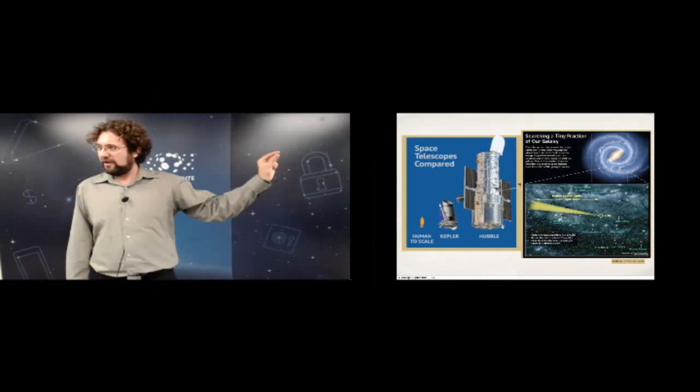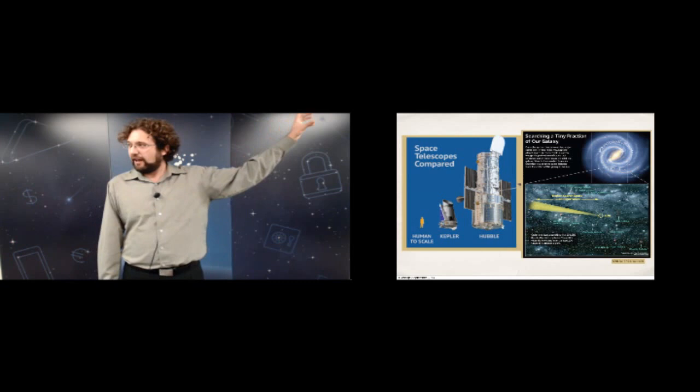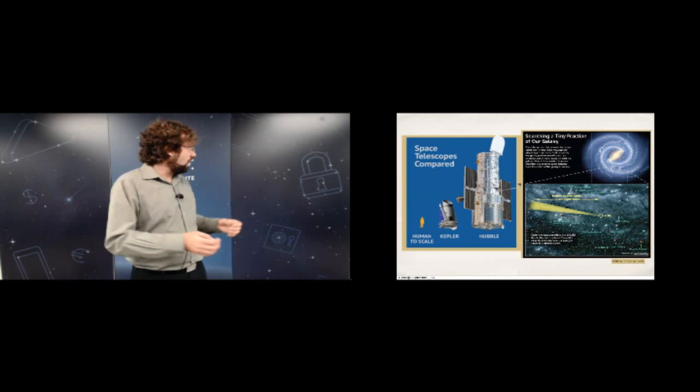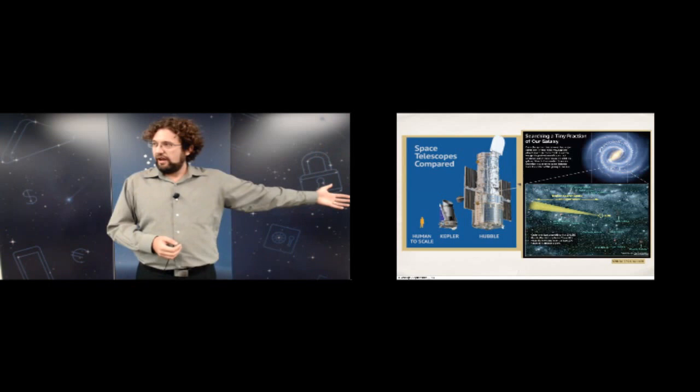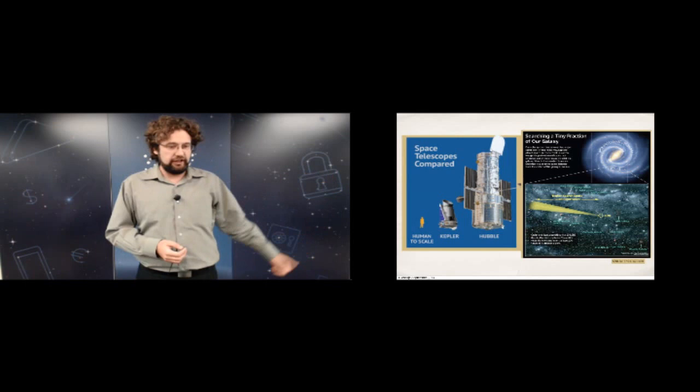A schematic of our galaxy shows the little rectangle of Kepler's survey area. Drilling down to our local solar neighborhood, we're going out around 3,000–4,000 light years, though for Earth-like zones perhaps only a few hundred to 1,000 light years. It's really just a drop in the bucket of the total discovery volume still awaiting us.